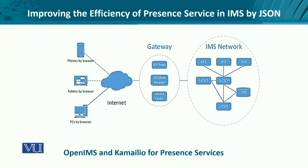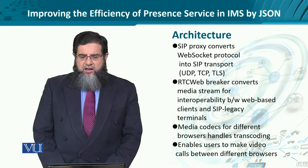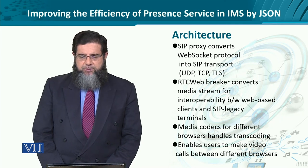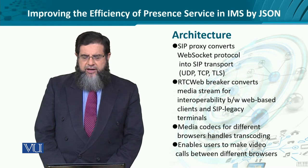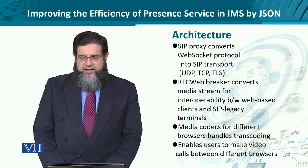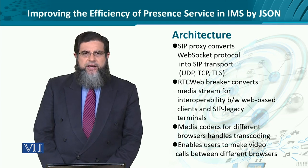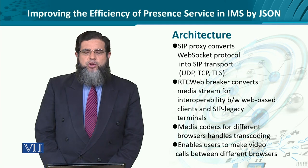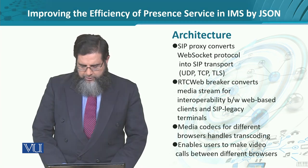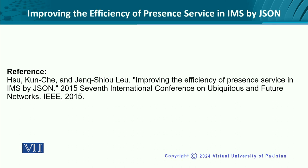The paper uses OpenIMS for its implementation and Cameleo for SIP-based presence services. The SIP proxy server converts typical UDP/TCP requests into SIP-enabled transport. The web breaker converts media streams between different clients — either SIP-legacy terminals or purely web-based clients. The codec allows transcoding to enable video calls between different browsers. The paper is from the Conference on Ubiquitous and Future Networks, published in 2015, titled 'Improving the Efficiency of Presence Services in IMS.'